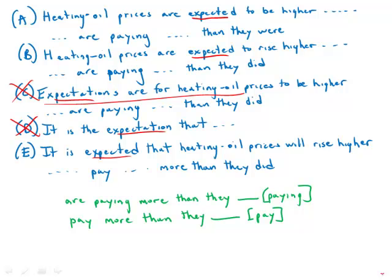And so we have heating oil prices are expected in A and B. It is expected that heating oil prices will rise. Notice this is a very wordy way to say it.